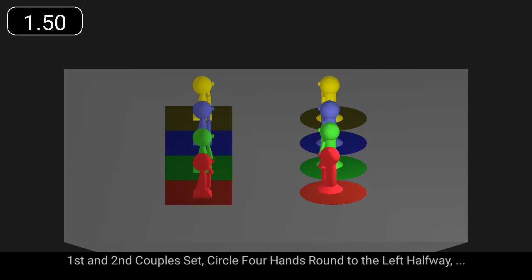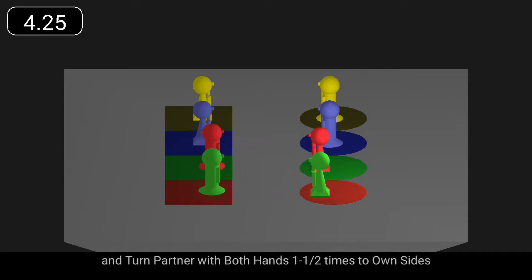First and second couples set, circle four hands round to the left halfway, and turn partner with both hands one and a half times to own sides.